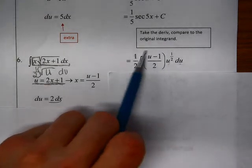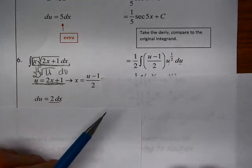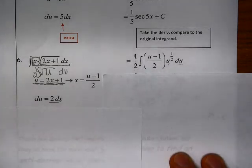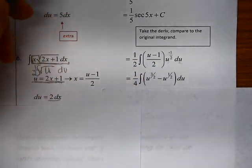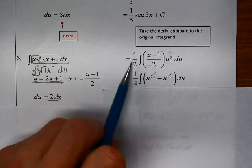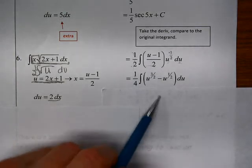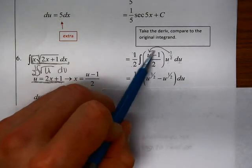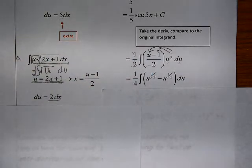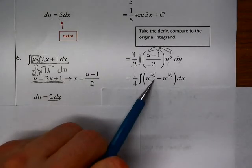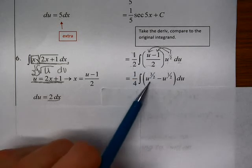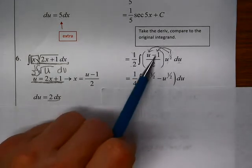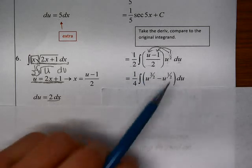I've gotten that now all rewritten in terms of u. Now I can do the antiderivative. Before I do that, I'm going to factor this 2 out, so I have not only a one-half but a one-fourth. Then distribute this u to the one-half to these two terms there. So I get u to the 3 halves minus u to the one-half. I'm adding these exponents up - 1 plus one-half is 3 halves. And then this is just u to the one-half times 1.